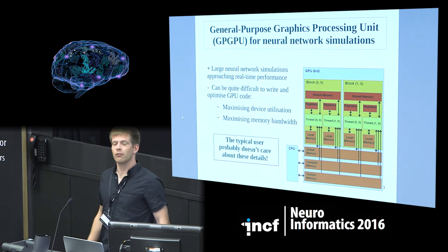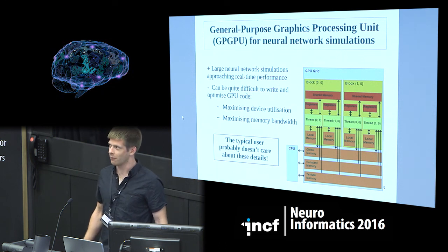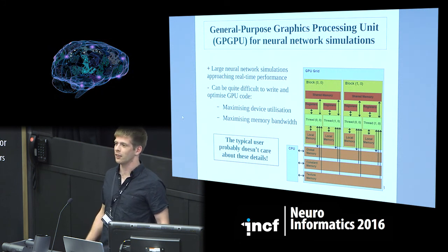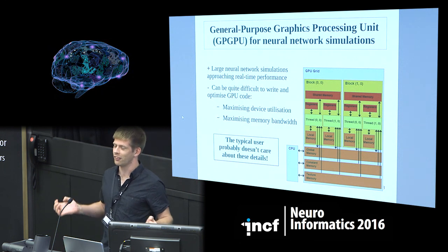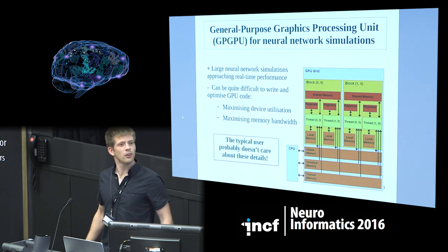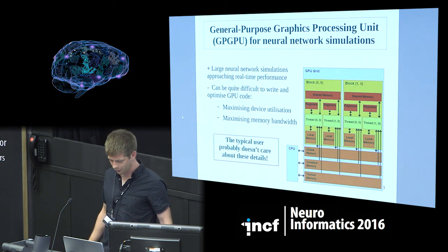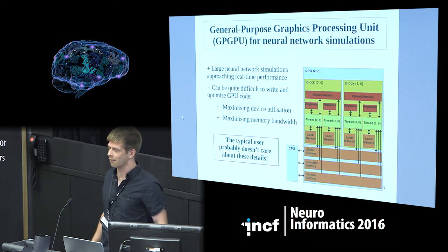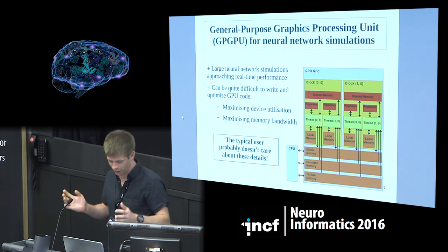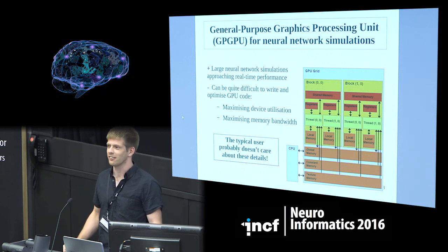The good thing about GPUs is that you can get very large network simulations at real-time performance. However, it can be quite hard to program these simulations. With GPUs it's a non-trivial problem to ensure that all resources on the graphics card are used 100% of the time, because GPUs are optimized for throughput rather than latency. Memory operations are quite expensive too — so that's another thing to program around. The typical user doesn't care about this stuff.